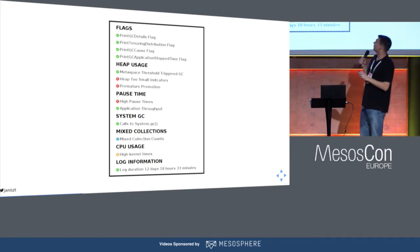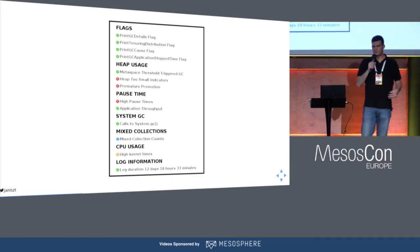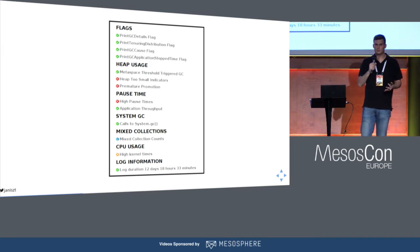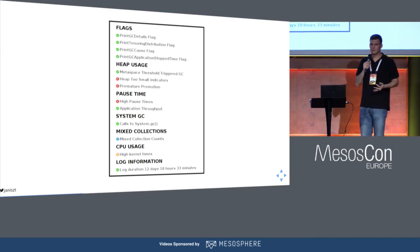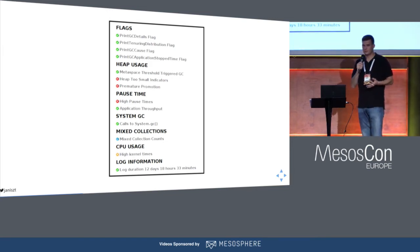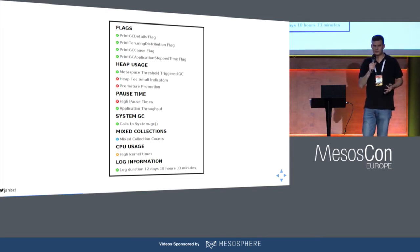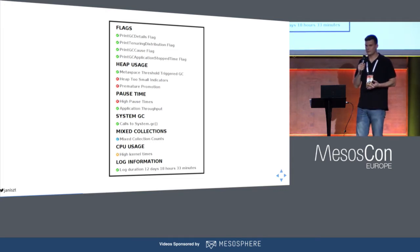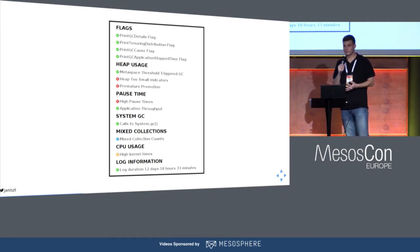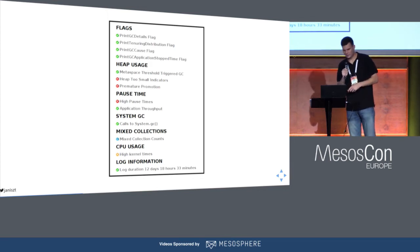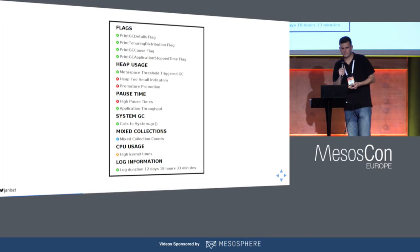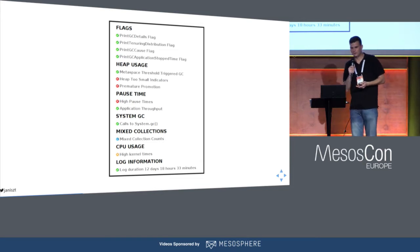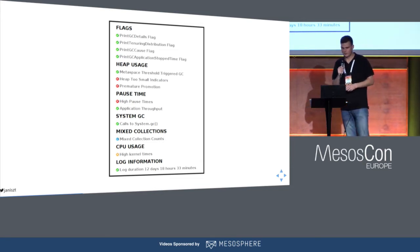There is a heap-too-small indicator, which means you may need to increase the heap or change some configuration about promoting objects on the heap. GC is a big topic — there are dedicated conferences for it — so I will leave it here, because everything depends. When we're talking about heap, it depends on your usage and the hardware you can provide.